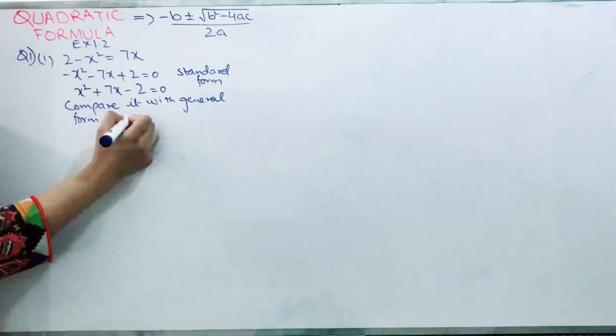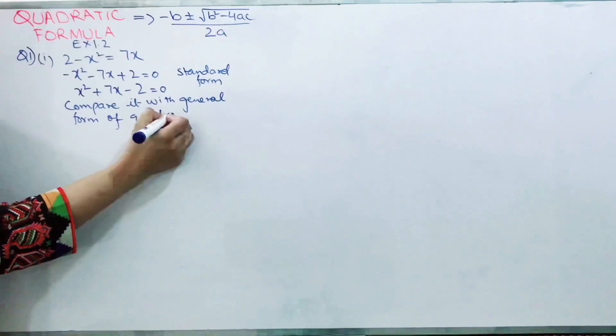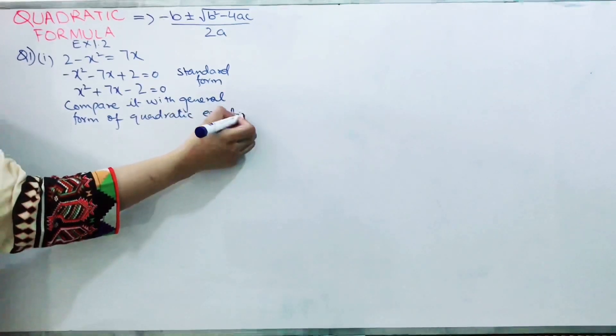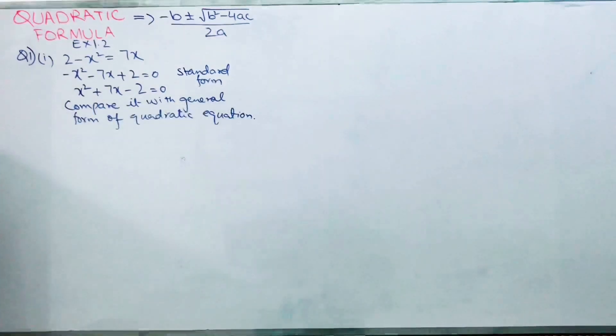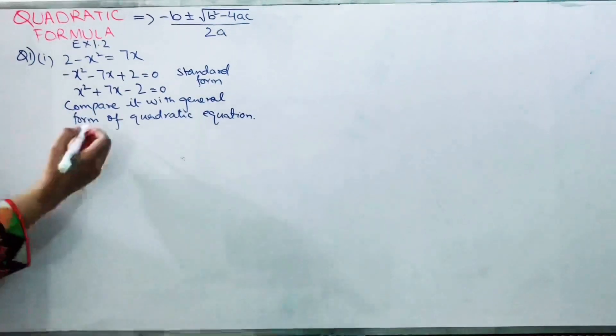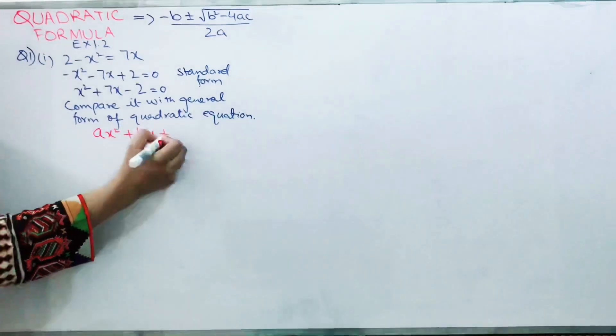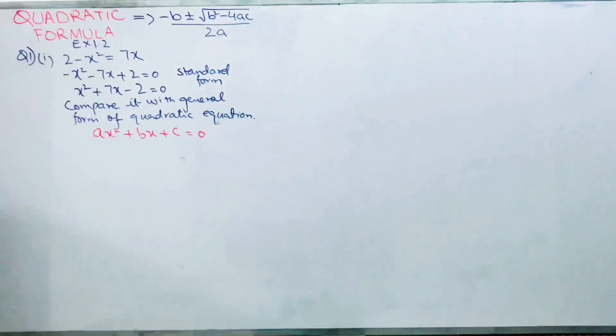What is that? I hope that you all know it. That is ax square plus bx plus c equals 0. Now you have to compare the coefficients of x square, x, and constant.